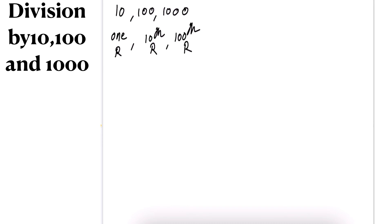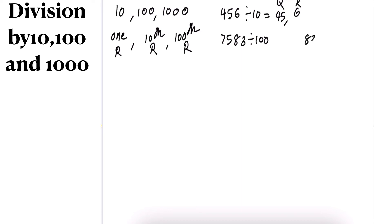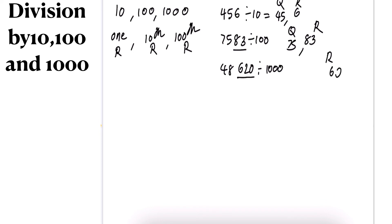For example: 456 divided by 10 — the ones digit, 6, is the remainder, and 45 is the quotient. Similarly, 7583 divided by 100 — from the tens position onwards, 83 is the remainder, and 75 is the quotient. And for 48620 divided by 1000 — from the hundreds position, 620 is the remainder, and 48 is the quotient.